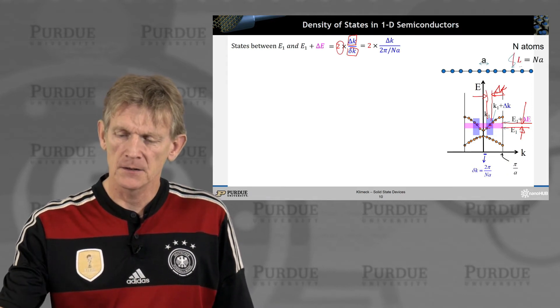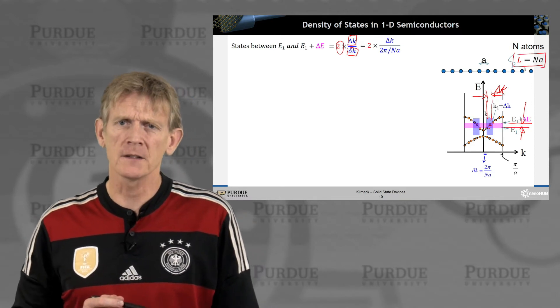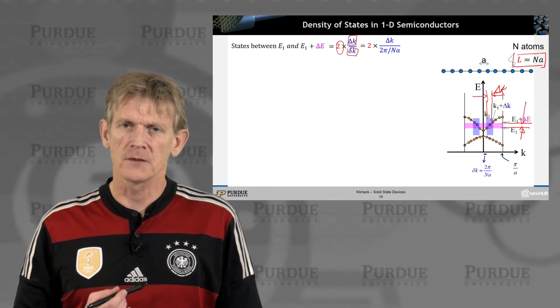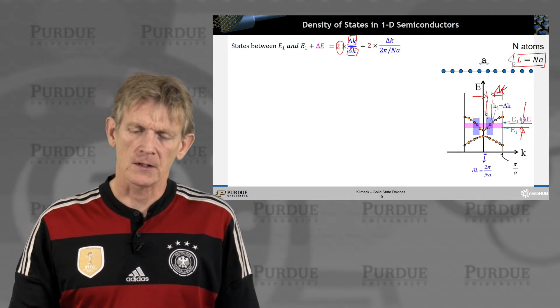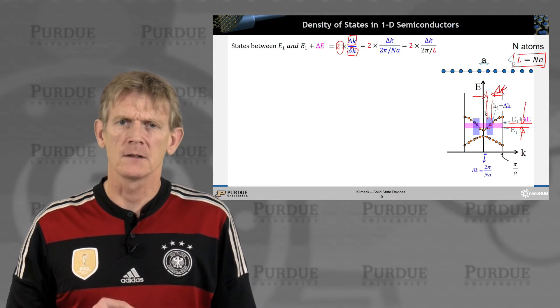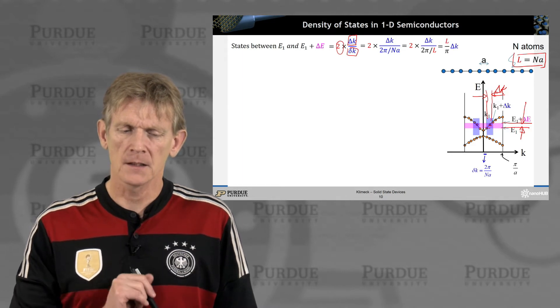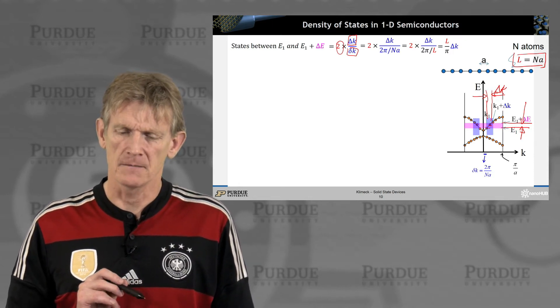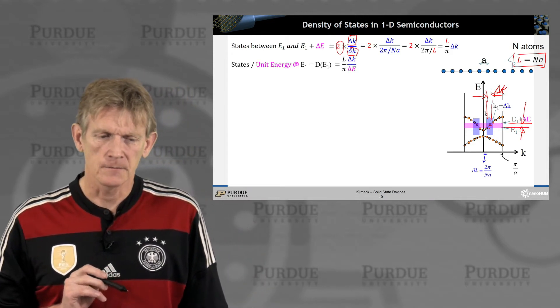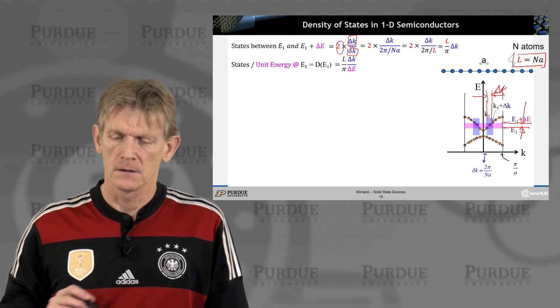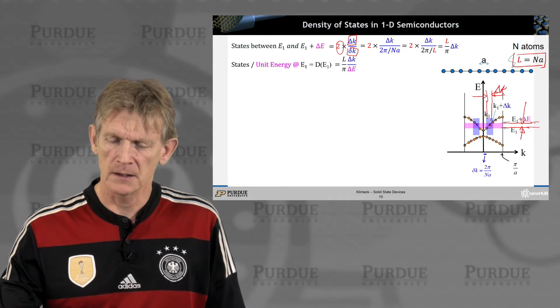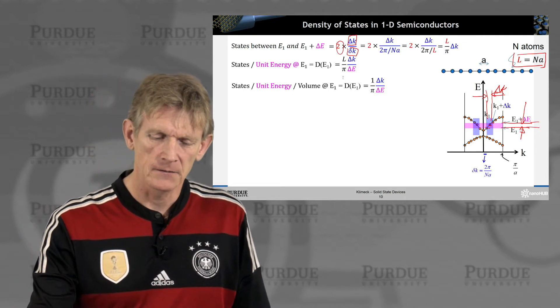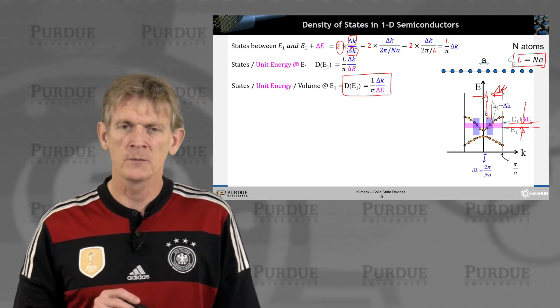That's important to know. And we need to know what is the separation between these number of states so we can count them in the x direction. The separation between states is 2π over nA. So we have two of these bluish slabs, that's the number 2 here. We have a box that is delta k wide, and we have states that are separated by little delta k with each other. So that's the number of k states that are in this slab.